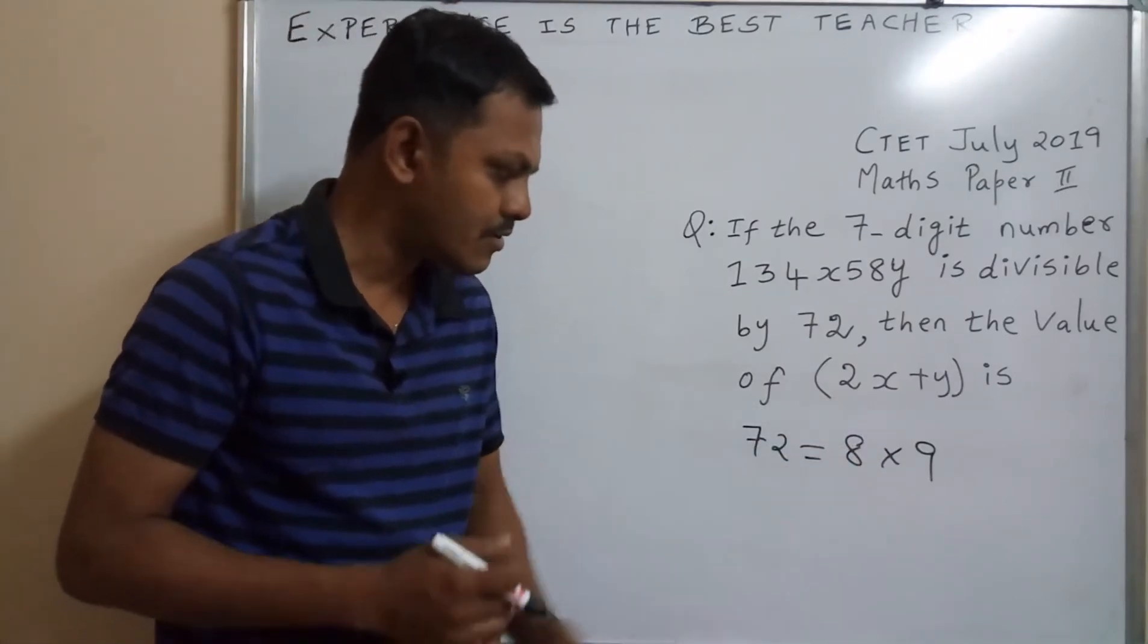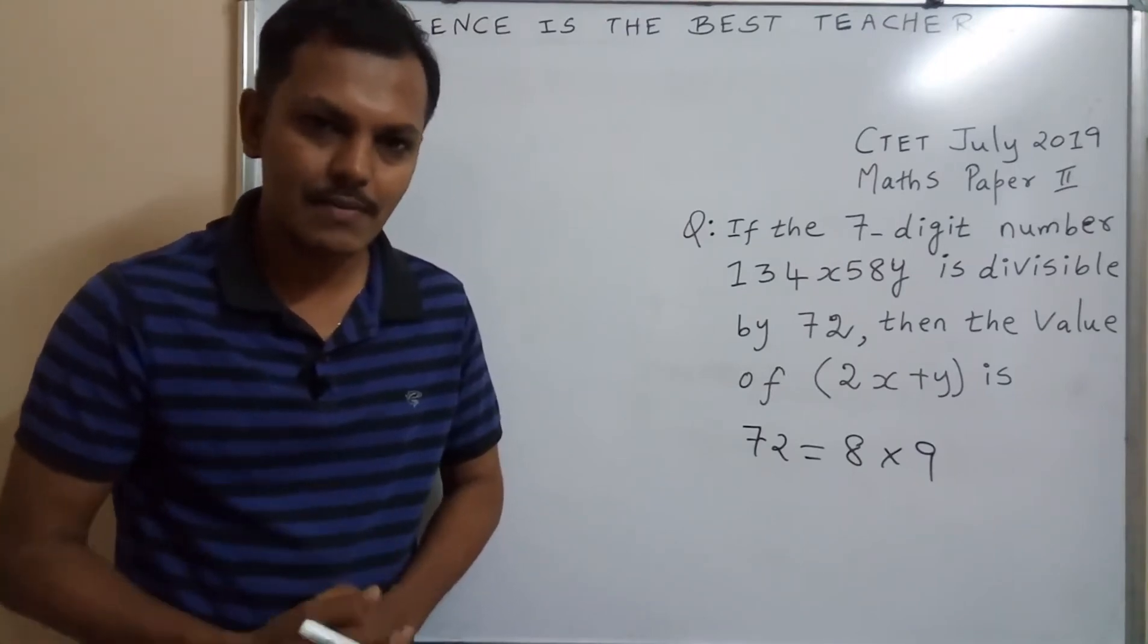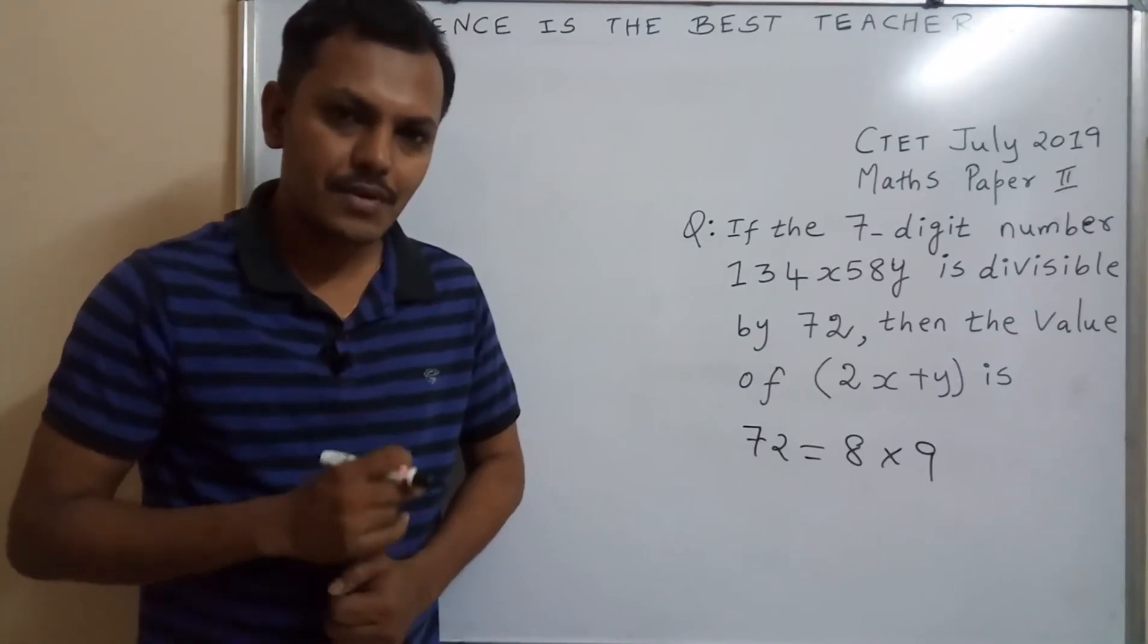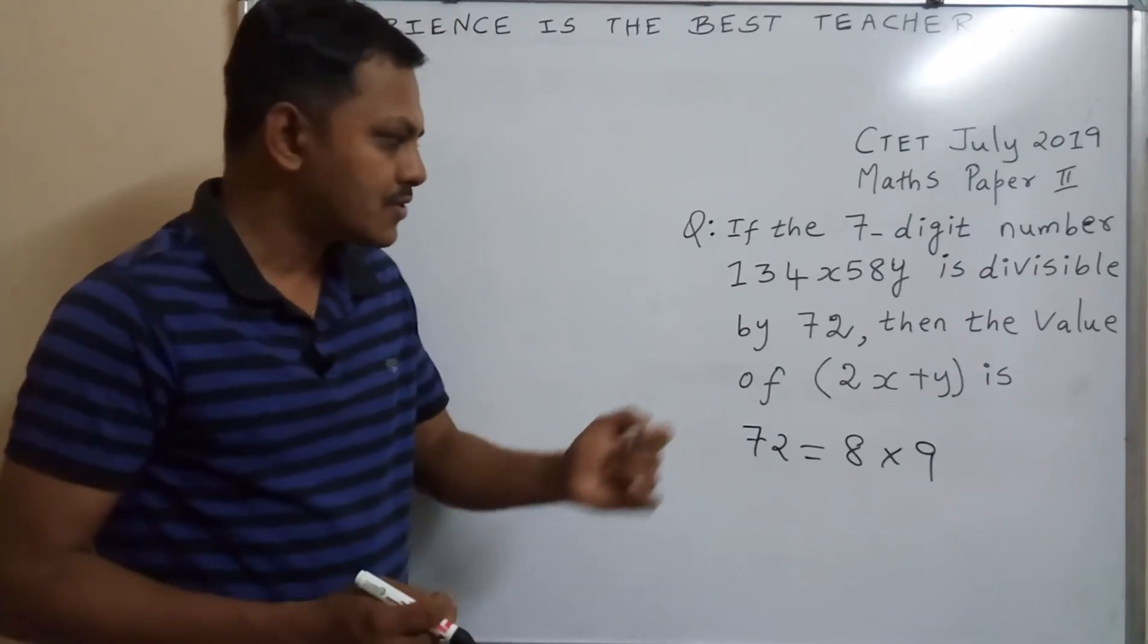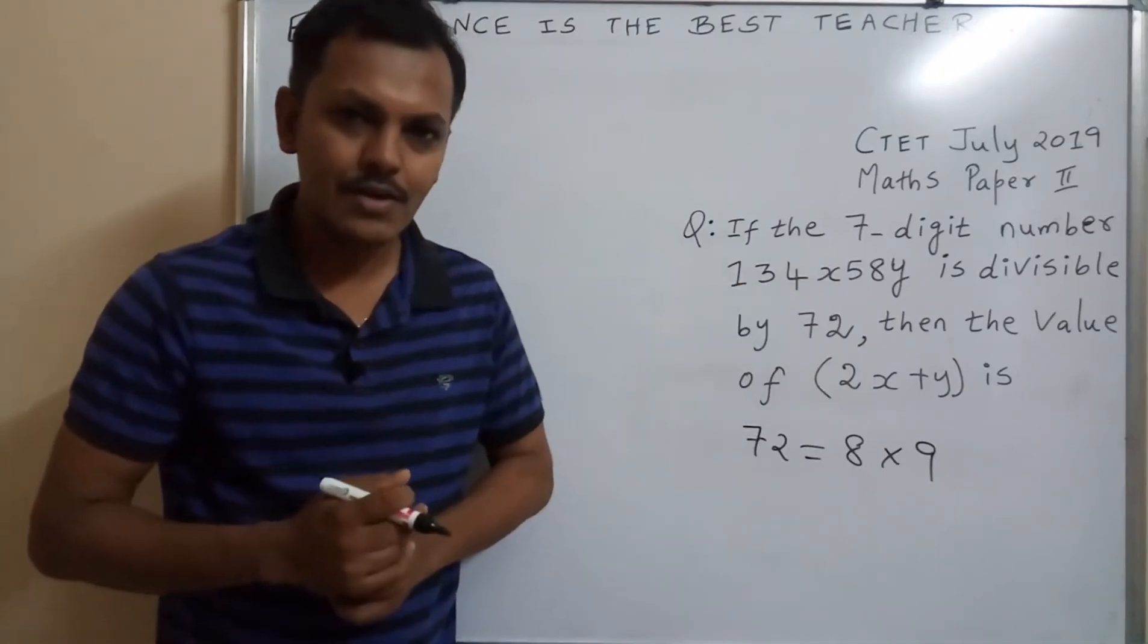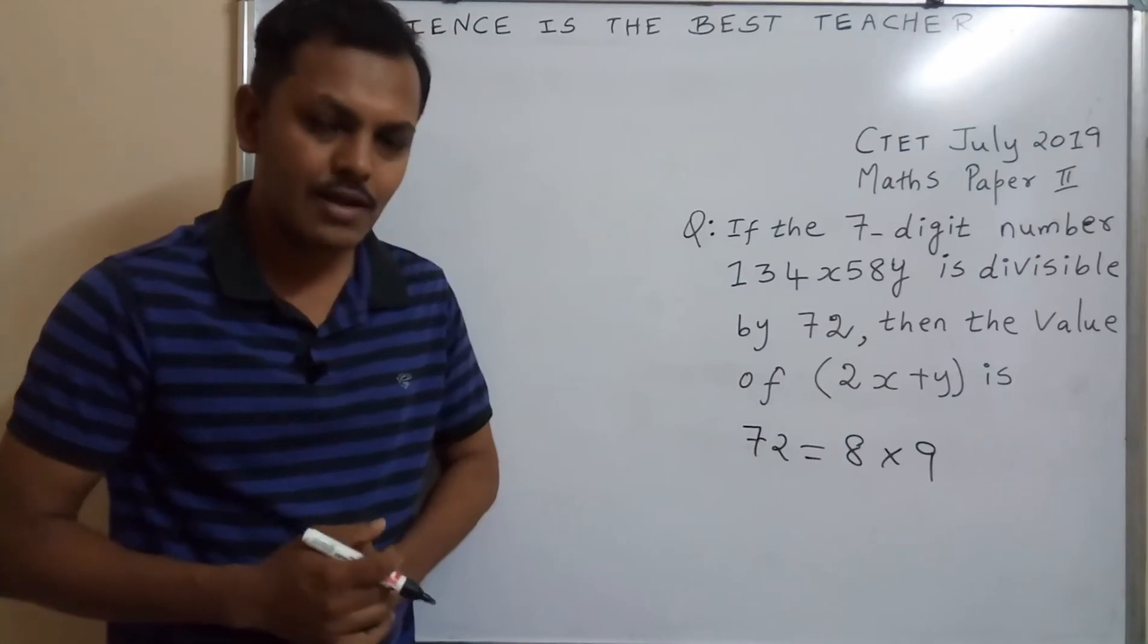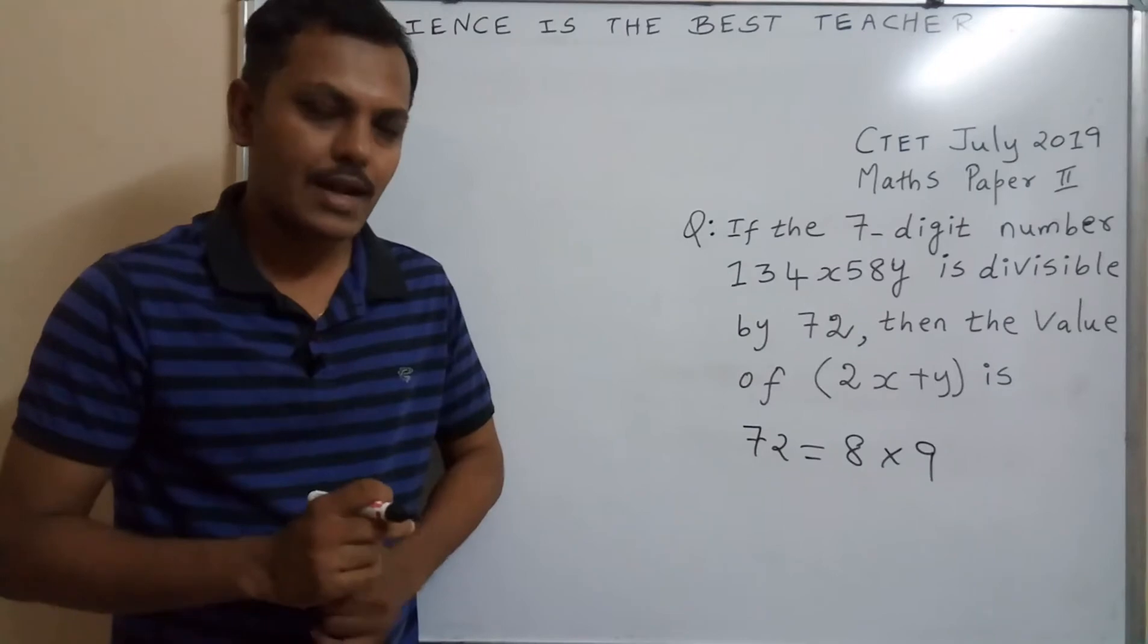Why we have to take 72 equal to 8 into 9 instead of writing 36 into 2 or some other number? 8 and 9 are single-digit numbers. Moreover, we know the divisibility rule for number 8 and divisibility rule for number 9. First, to find out the y value, we will apply the divisibility rule for number 8. To find out the x value, we use the divisibility rule for number 9.